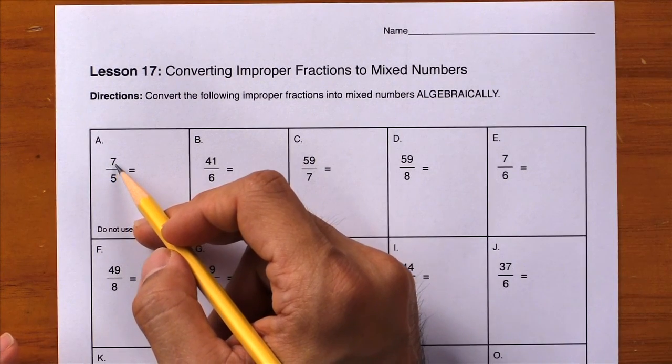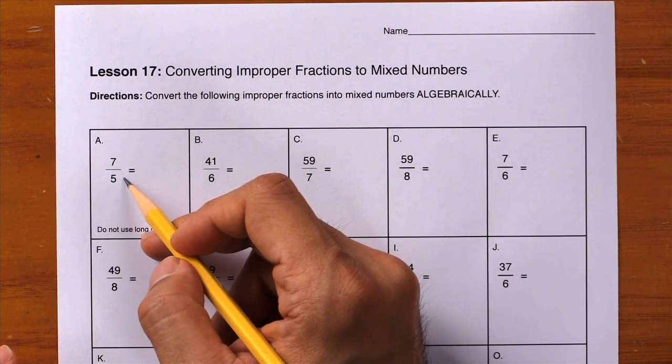We're on lessons 17 and 18, converting improper fractions to mixed numbers. By this point many students will be ready for another time-saving tip. Let's take a look at box A. Here we have the fraction 7 fifths.